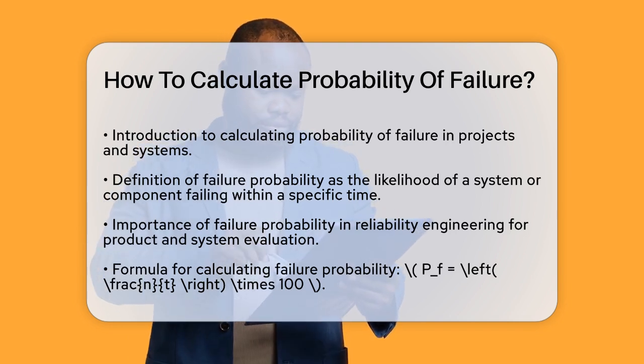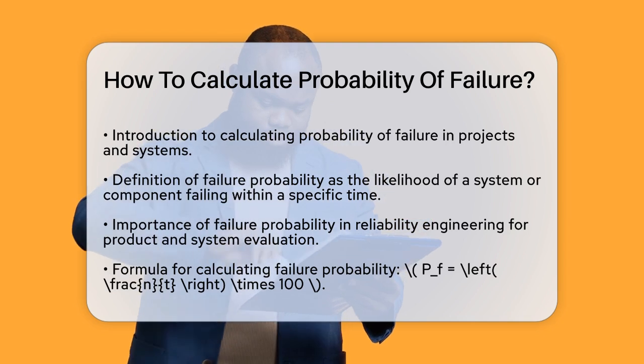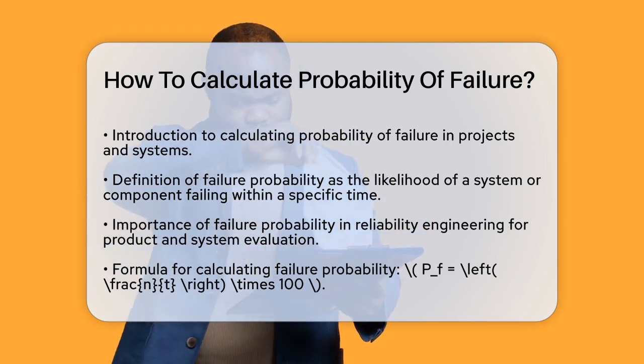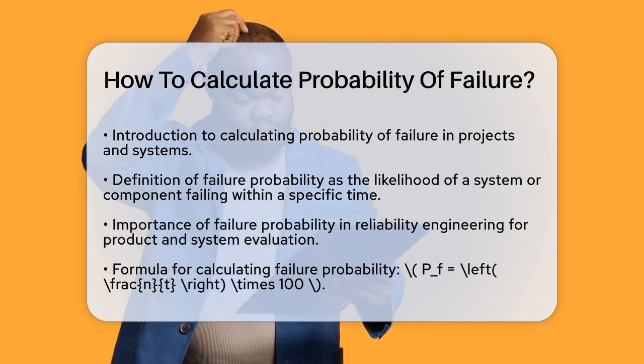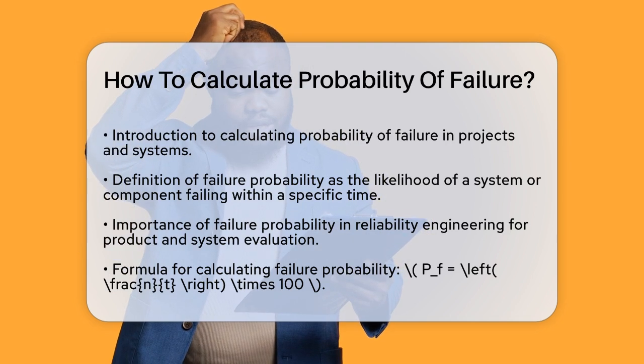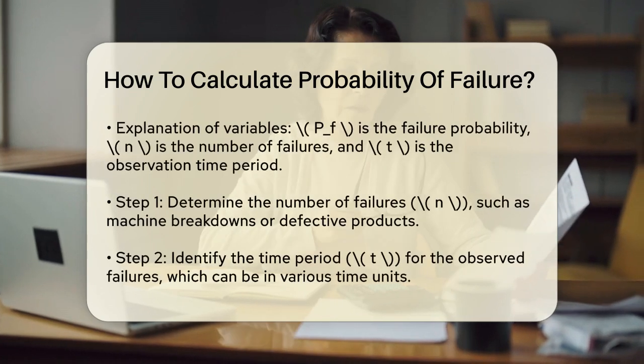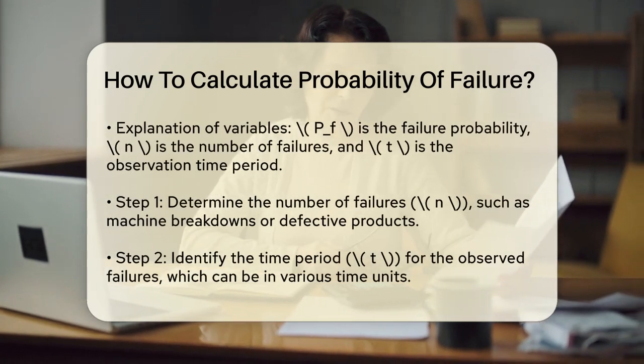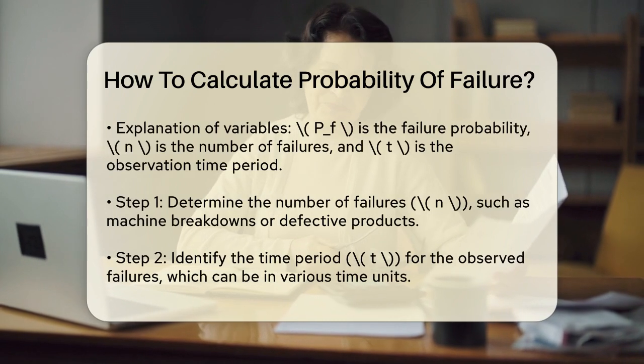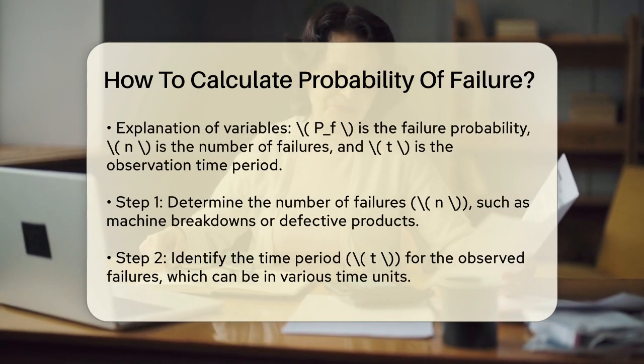Now, let's get into the calculation. The formula for failure probability is quite straightforward: P_f equals (n/t) times 100. Here, P_f is the failure probability expressed as a percentage, n is the number of failures that have occurred, and t is the time period over which these failures were observed.